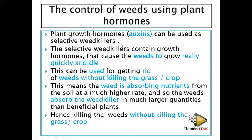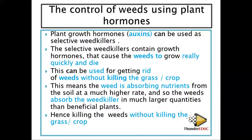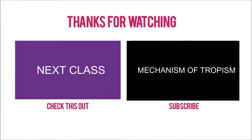Auxins are growth promoters, but they can also be used as weed killers. You spray them on the crops, including the weeds. Because weeds have the ability to absorb at a higher rate, they absorb the auxins quickly and grow very fast compared to normal plants. They use up all their nutrients and end up dying before the crops die. When they die, they leave ample space for the other crops to grow without being affected. That is how auxins are used as weed killers.